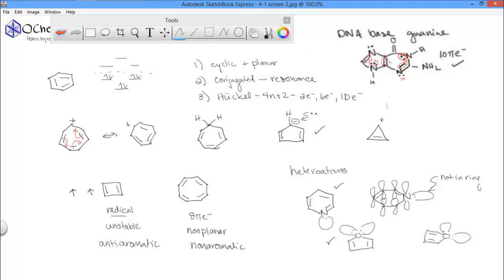And now when we count up our pi electrons in guanine, we have 2, 4, 6, 8, 10 pi electrons. The structure is cyclic, planar, and conjugated. So guanine is an aromatic compound.